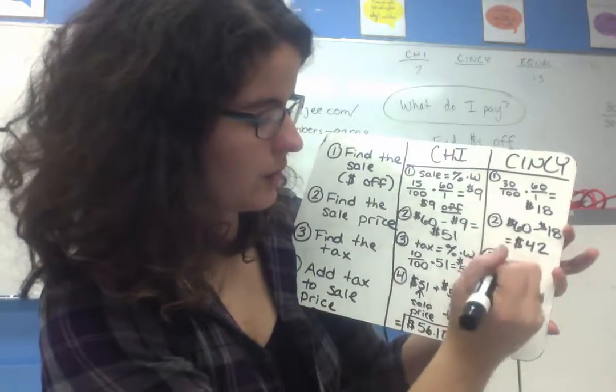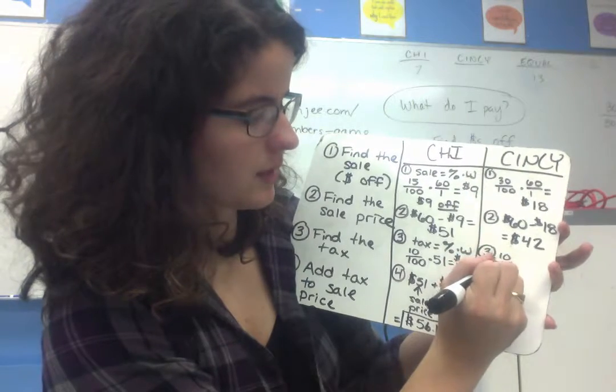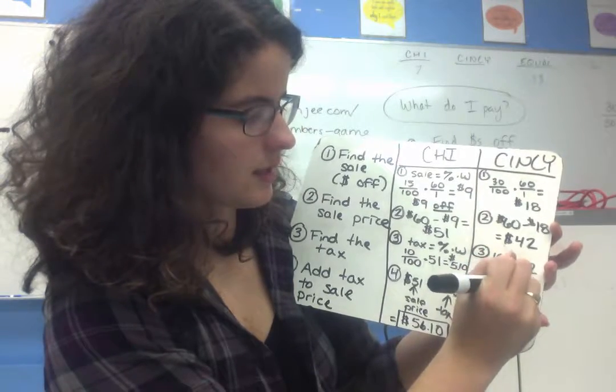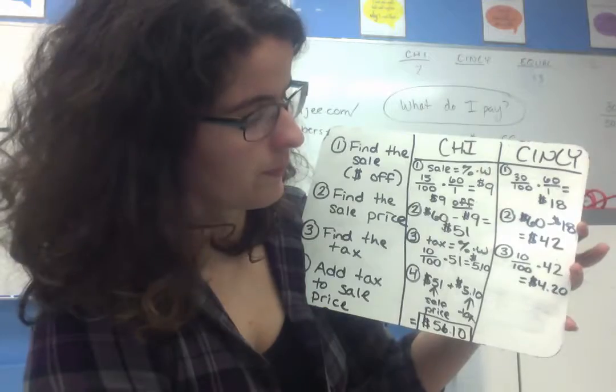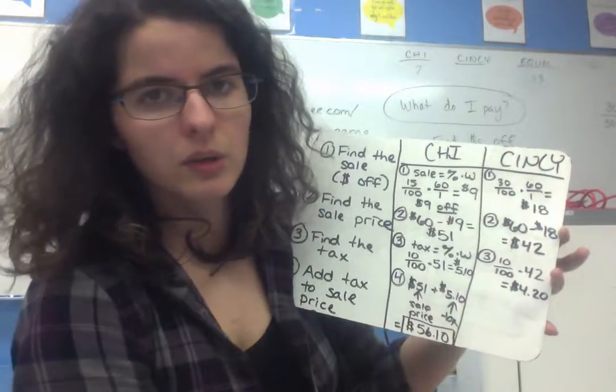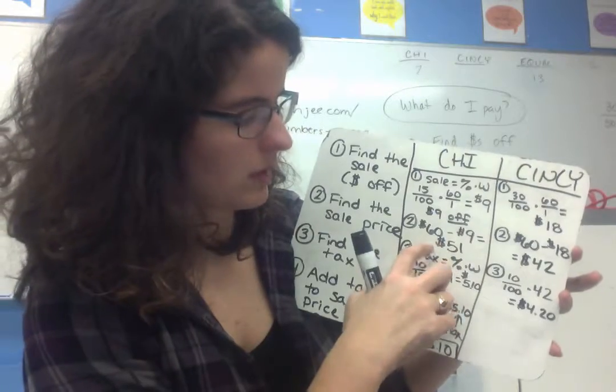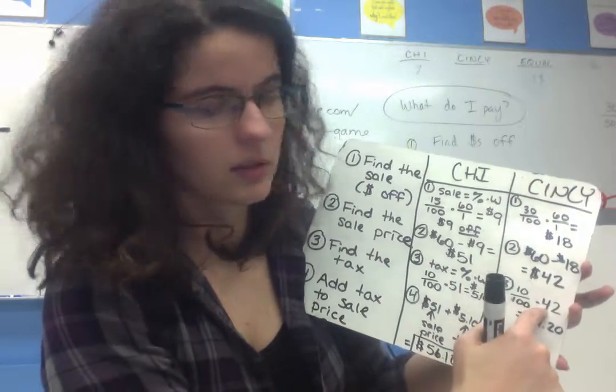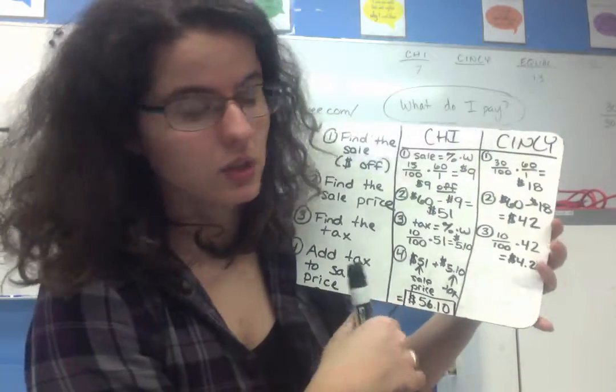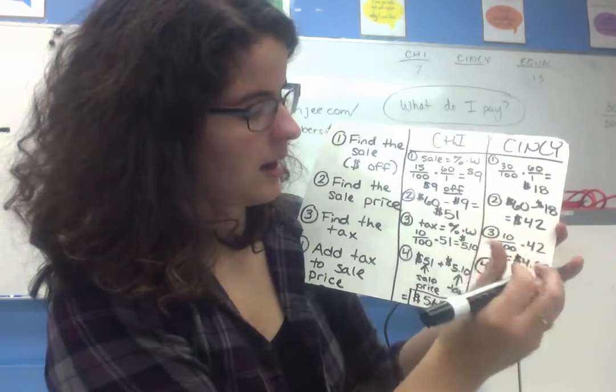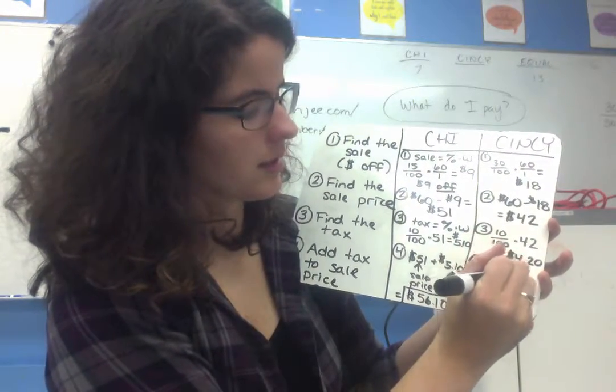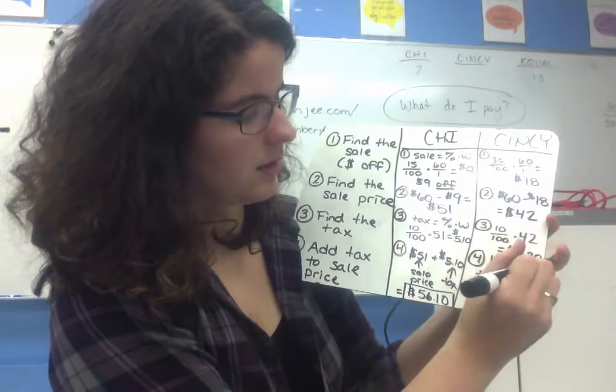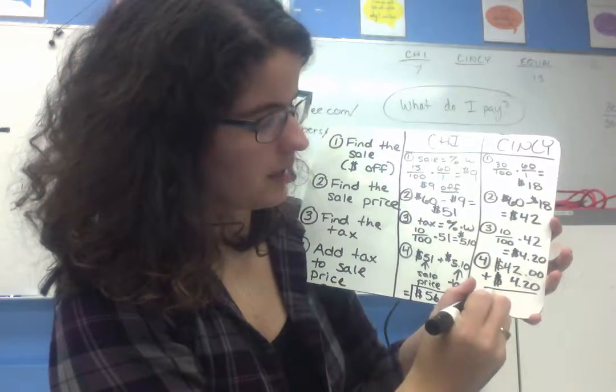To find the tax on that $42, I would need to take my 10% of 42, and that ends up being $4.20. You notice if it's 10%, you can really just cut 42, divide it by 10. Same with $51, 10% of that, divide it by 10. $5.10, $4.20, you've just divided your thing by 10, since it's 10% chunks. Given my $42, that's the sale price, plus my $4.20, that is my tax, I am going to end up with...